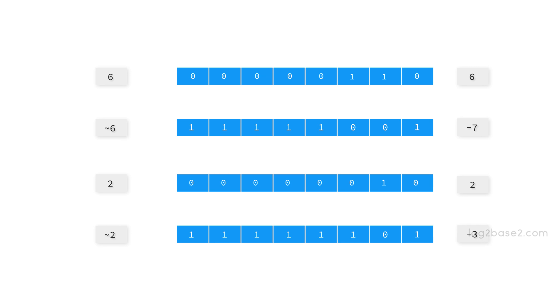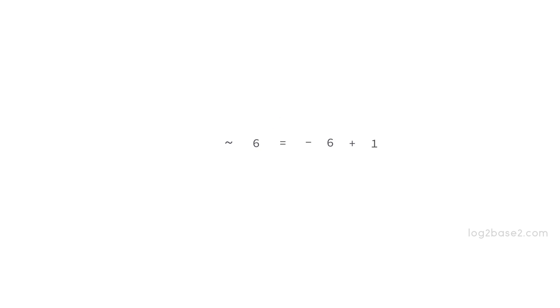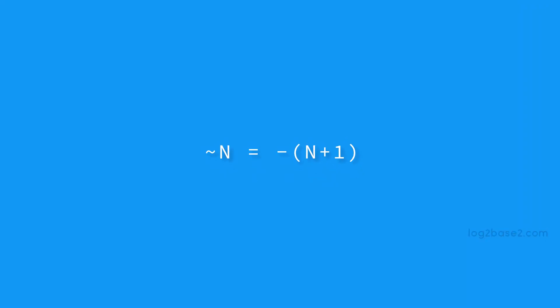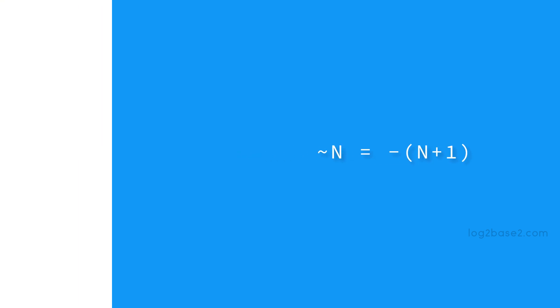If we observe the previous results, the complement of six equals minus seven, which is minus of six plus one, and the complement of two equals minus three, which is minus of two plus one. So in general, the bitwise one's complement of n is equal to minus of n plus one. That's all — thank you for watching this video.